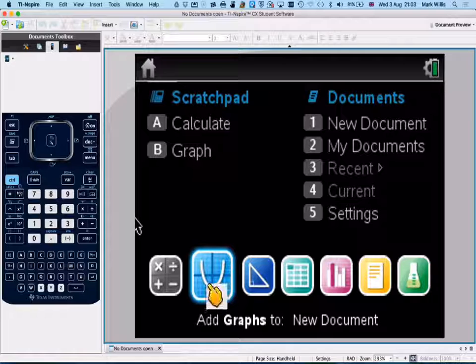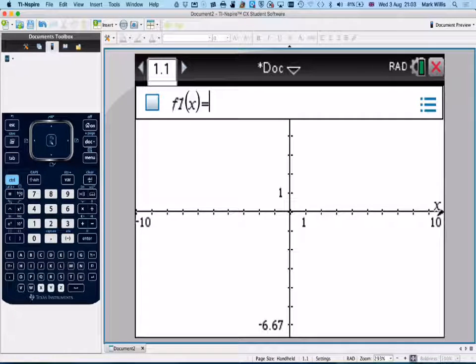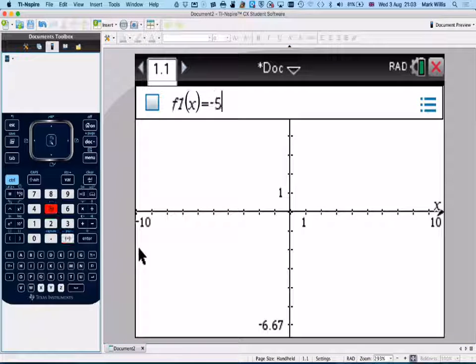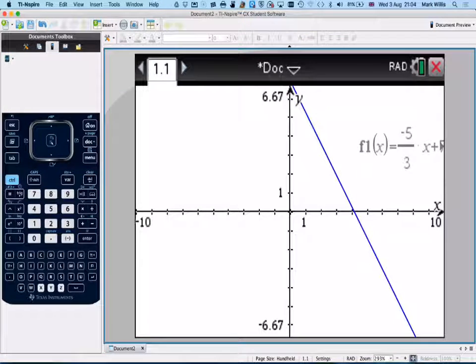We're going for a graphing mode, so select graphing mode. Write in the first one, so just write in minus 5 divided by 3x plus 7, enter. I'm just going to move the cursor slightly over to there.